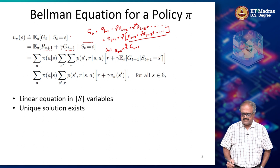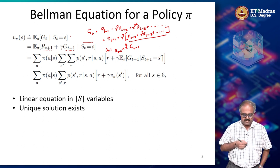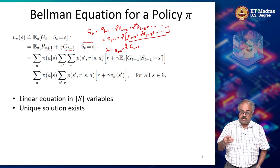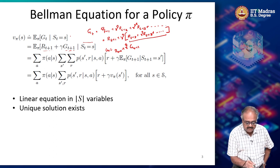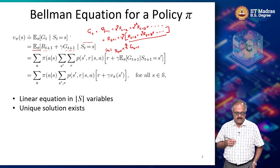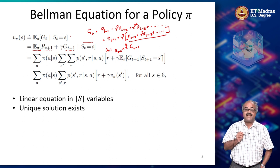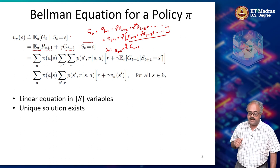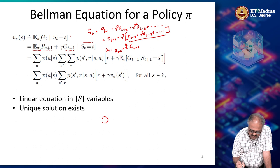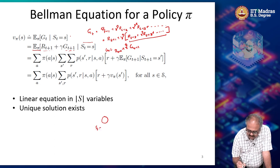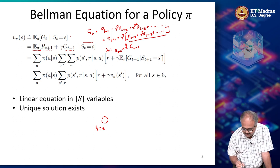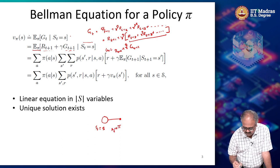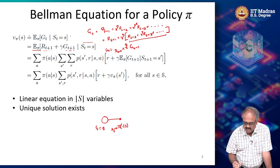Now I can go a step further and roll this out. What does this expectation E_pi mean? We looked at it in the last lecture. I am starting from some state — S_t is fixed to be small s. Then I take an action: A_t is going to be sampled from pi(s). Then the next state S_{t+1} and reward R_{t+1} are sampled from the probability distribution p(s', r | s, a).